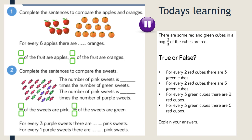Complete the sentences to compare the apples and oranges. We've got six apples and 12 oranges — that's a ratio of 6 to 12. For the fractions: there are six apples out of 18 fruits total, so six eighteenths are apples, and 12 oranges out of 18 fruits, so twelve eighteenths are oranges.